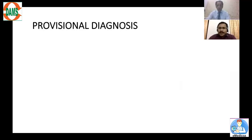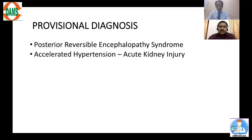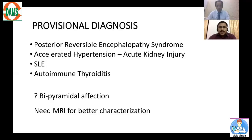At the end of history, examination, non-contrast CT, and blood investigations: we have accelerated hypertension possibly causing PRES, with acute kidney injury — making it a hypertensive emergency because of end-organ damage. The patient also has SLE and autoimmune thyroiditis. But we are still not fully satisfied because the bipyramidal findings are not fully explained — everything is not solved yet.